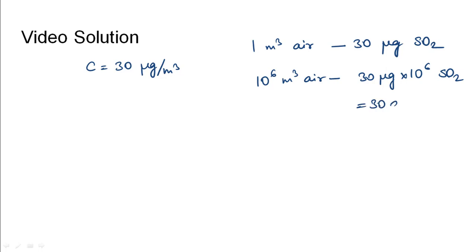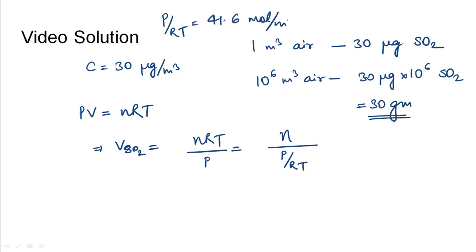From the gas equation PV = nRT, we have the volume of sulfur dioxide as nRT divided by P. We will rearrange it to form n/(P/RT). Since the value of P/RT is mentioned in the problem statement as 41.6 moles per meter cube, we have n/41.6.